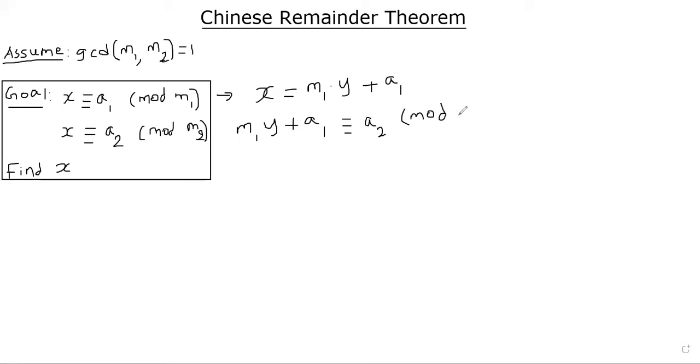So now I'm going to simplify this further and move around A1 and A2 to get M1 y is equal to A2 minus A1 mod M2.